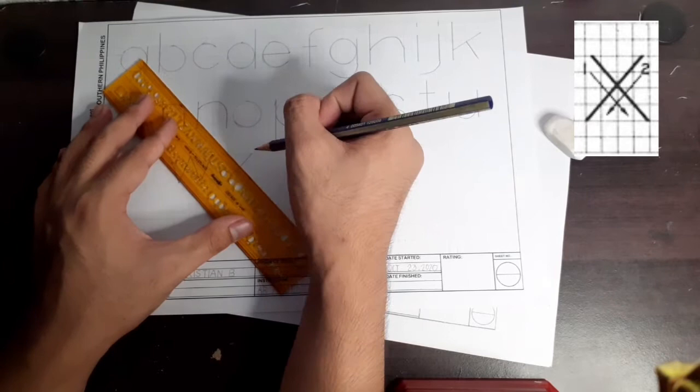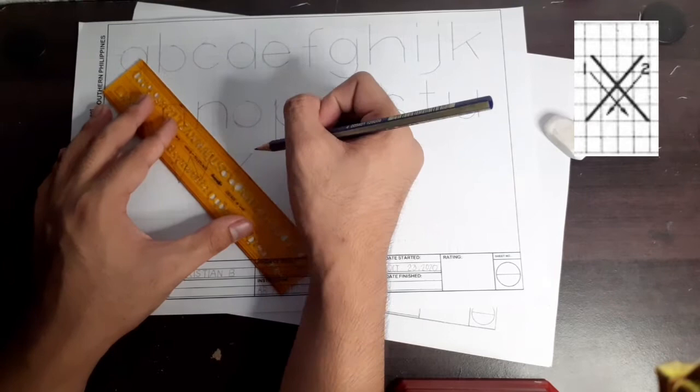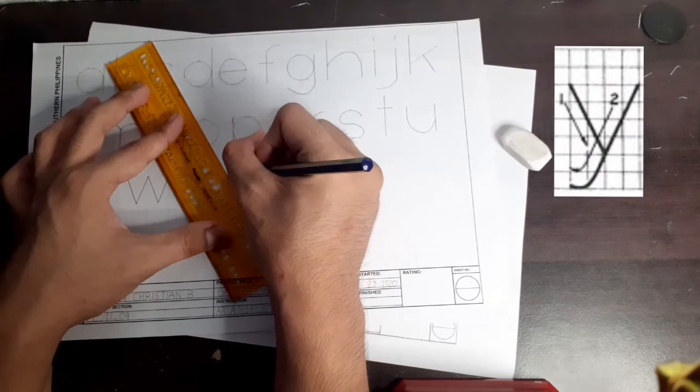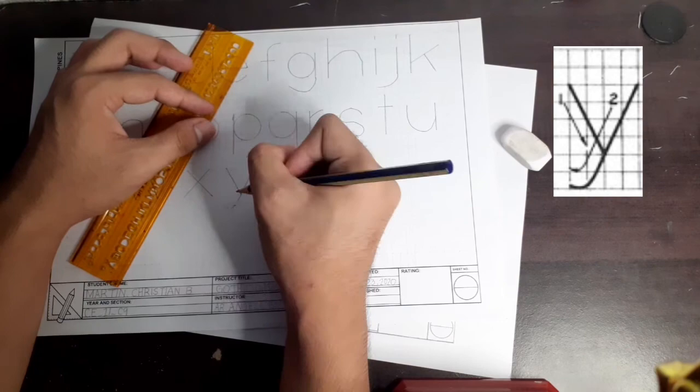For letter X, a slanting line going to the right first, and a slanting line going to the left is second. Letter Y is almost the same with letter V, but its second slanting is extended just as shown in the picture.